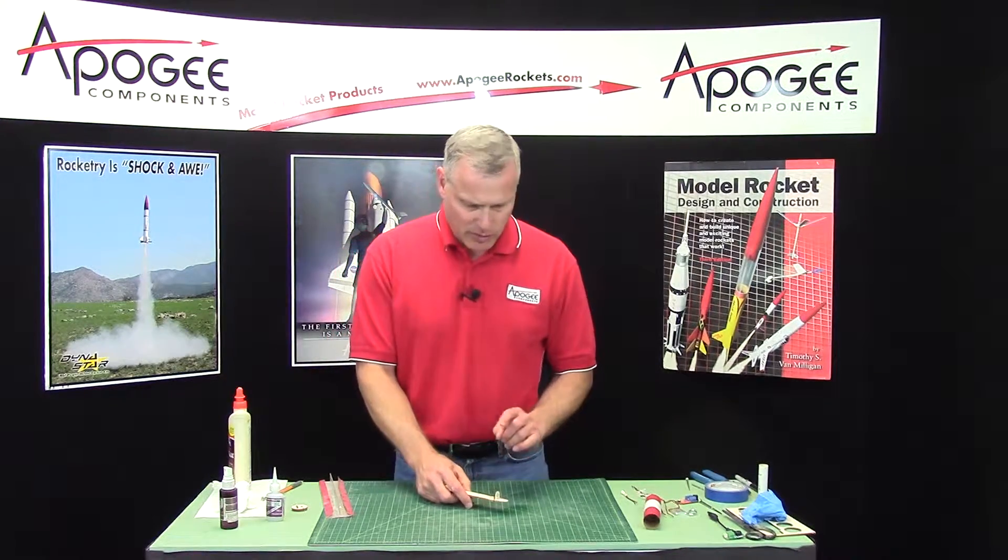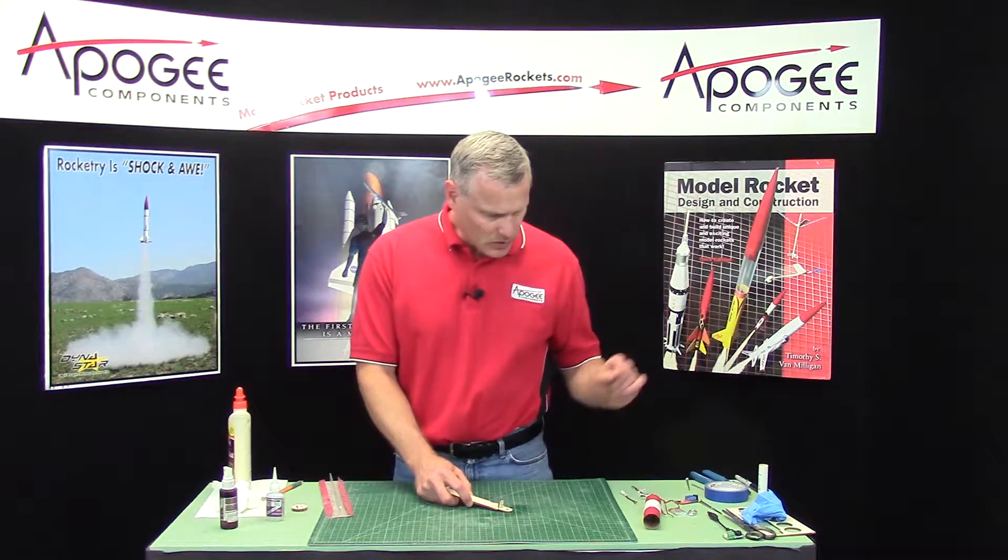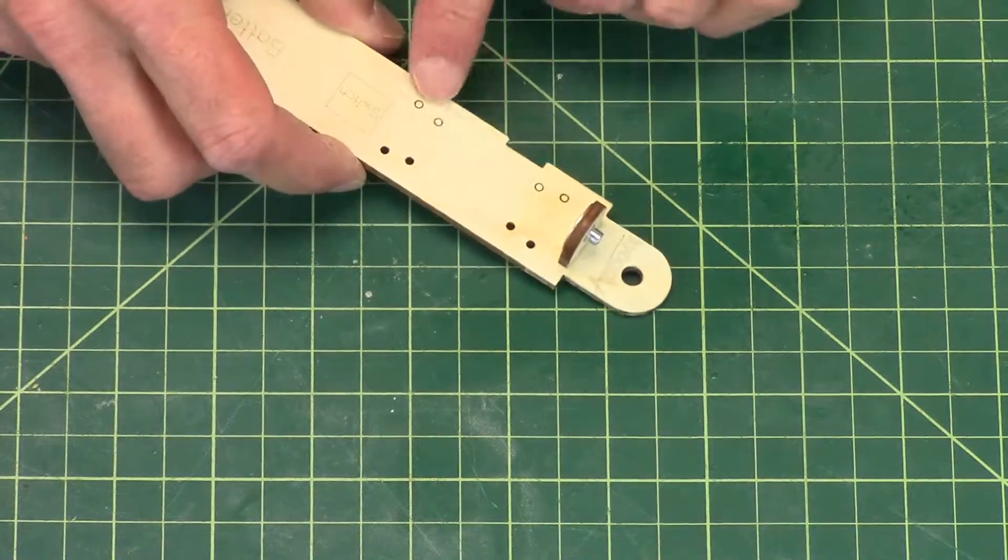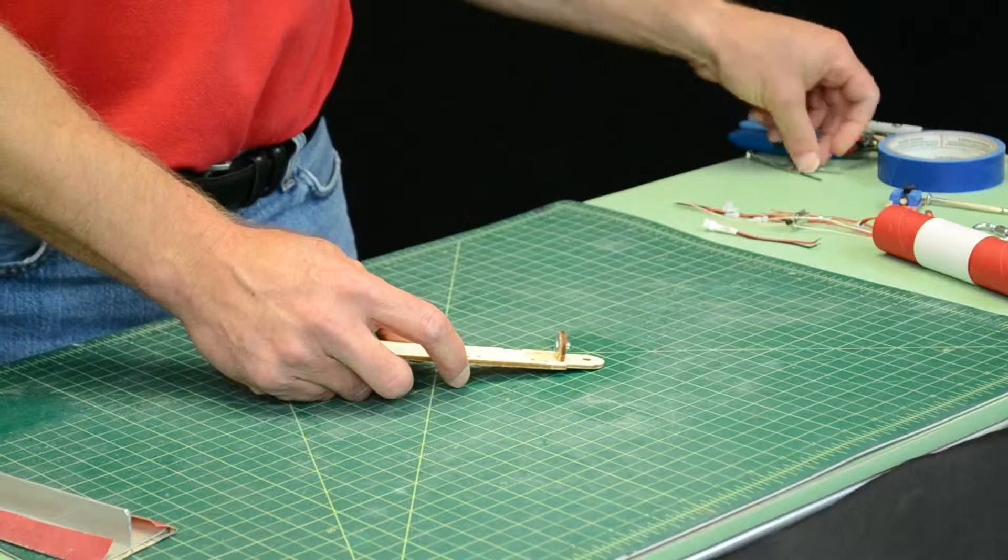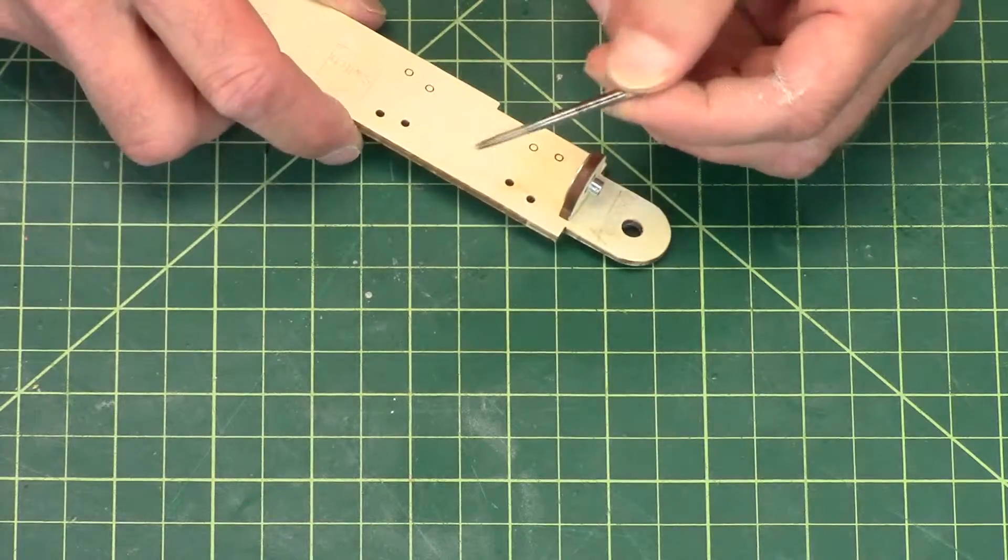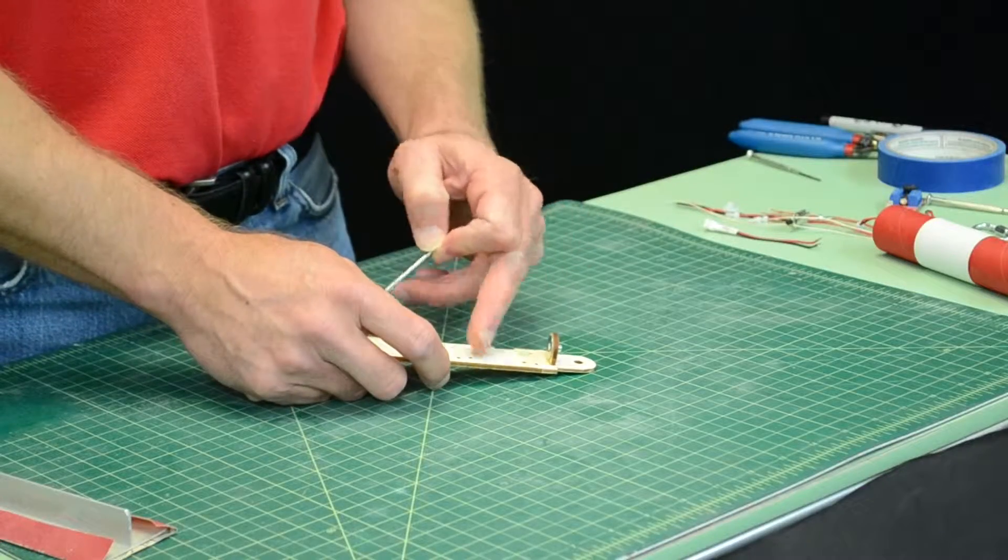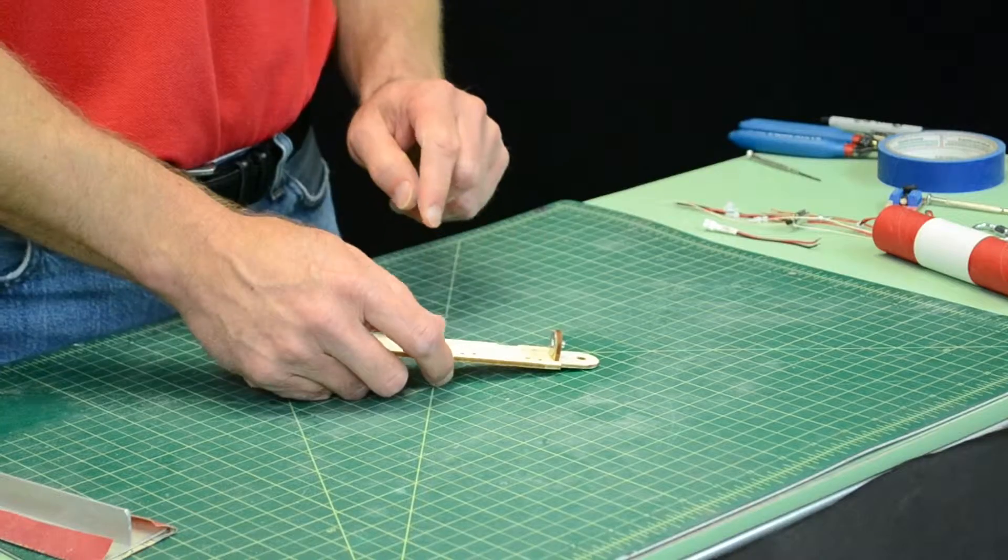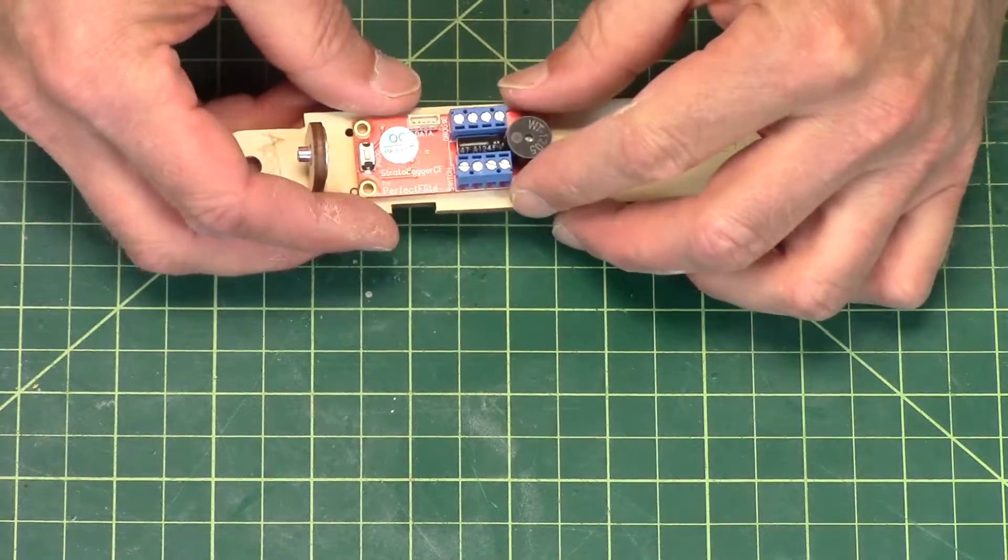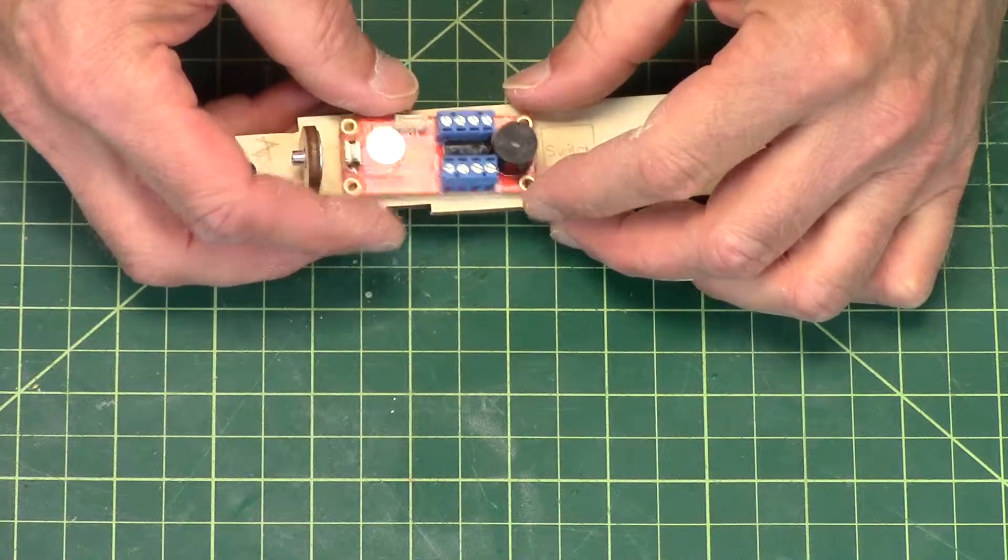Our next step after that is to thread the holes in the sled. And for this you're going to need a 4-40 tap. That's what I have here. You don't have to thread all the holes. You only need to thread the holes for your altimeter that you're using.